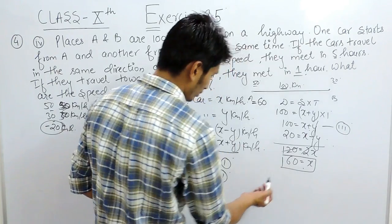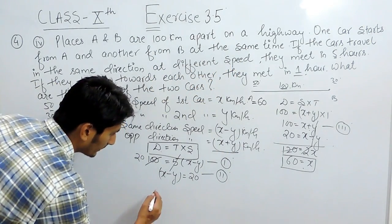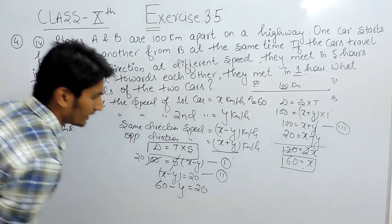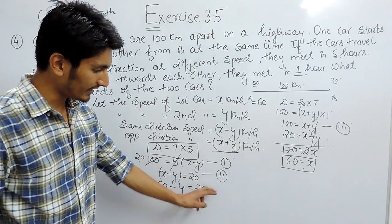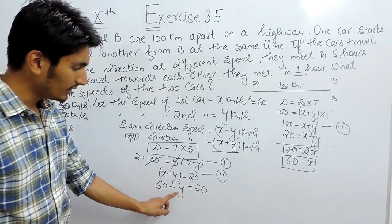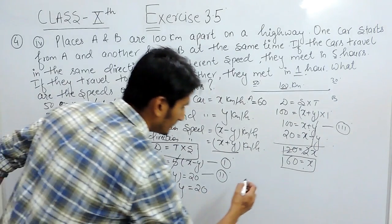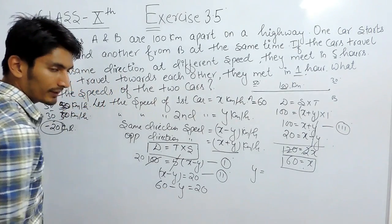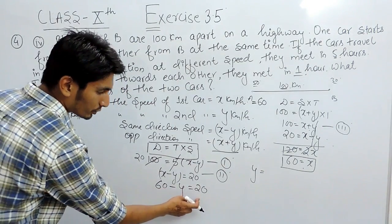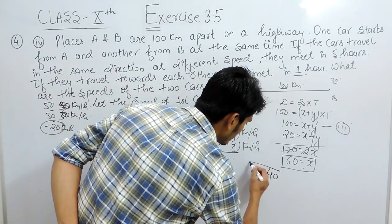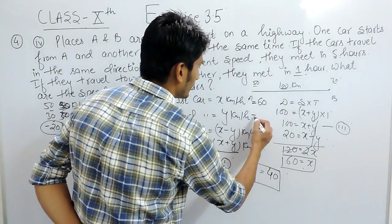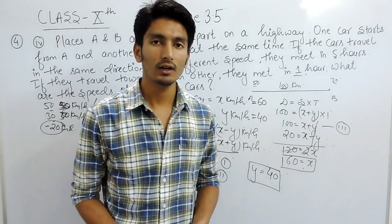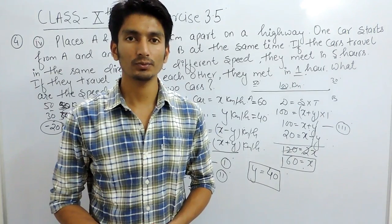Substituting x = 60 into the first equation: 60 minus y = 20. Shifting the variable gives y = 60 minus 20 = 40. So the value of y is 40 km per hour — the speed of the second car is 40 km per hour. This is how you solve this question. Thank you.